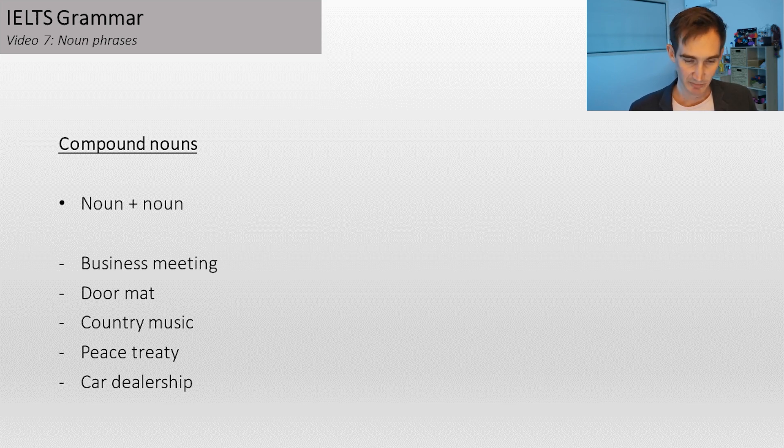Door mat. Country music. Peace treaty. Car dealership. These are noun plus noun combinations, but you can basically think of them as one noun.